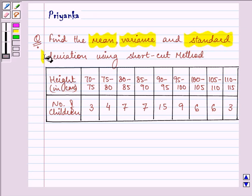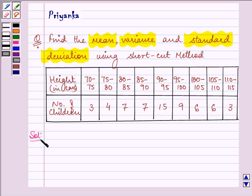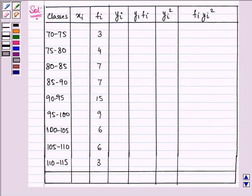So here let us draw a table to simplify our solution. Now here we need to find out firstly xi and that we know is lower limit plus upper limit divided by 2. So let us quickly calculate it.